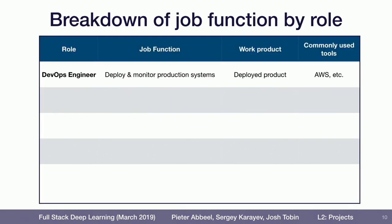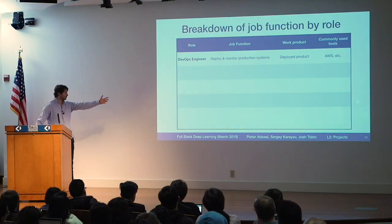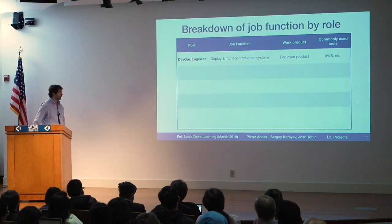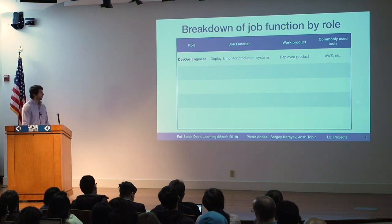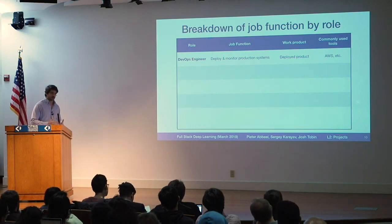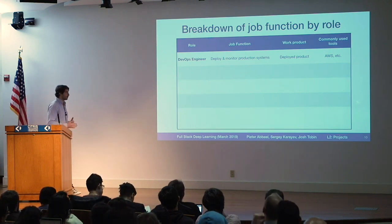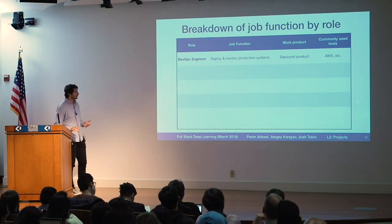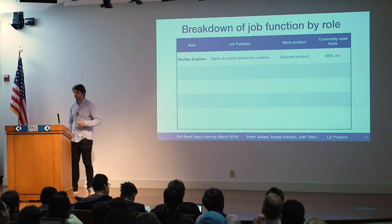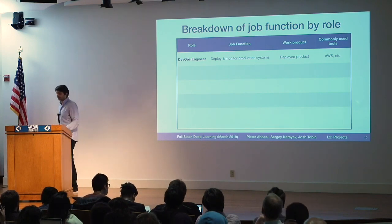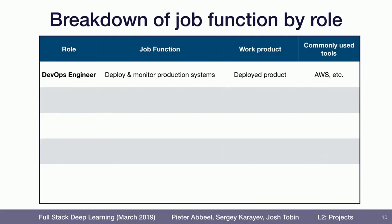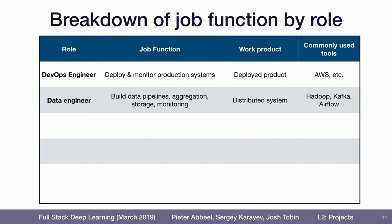Breaking it down a little bit, starting with DevOps engineer: typically what DevOps engineers do is they deploy and monitor production systems. The work product they're producing as a result of their job is a deployed product. The tools that they're using are maybe AWS Lambda or some other deployment tools.